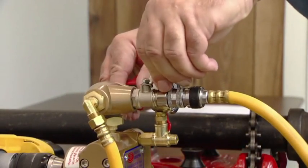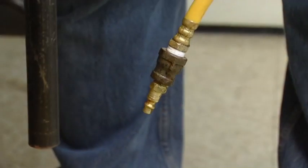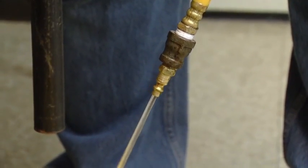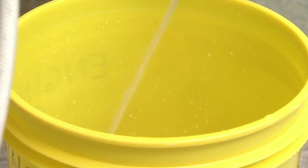Open the discharge valve and run the drill. This step is known as priming the pump. Run the pump until the air is purged from the system.